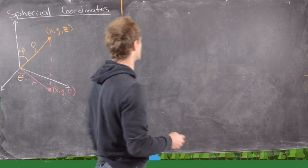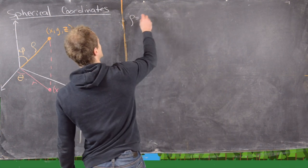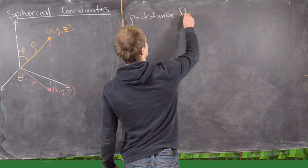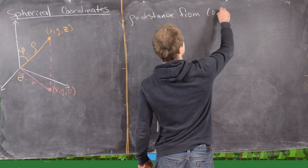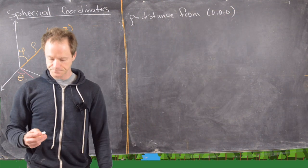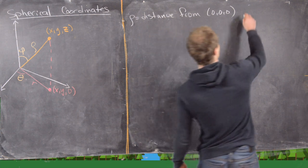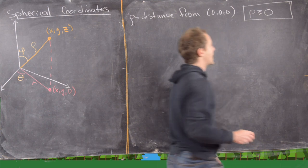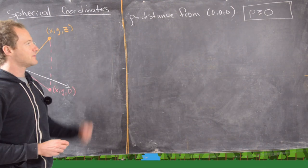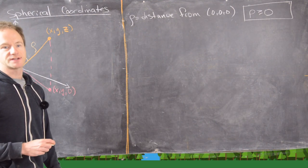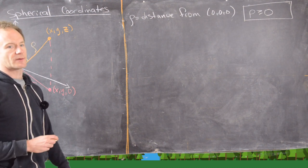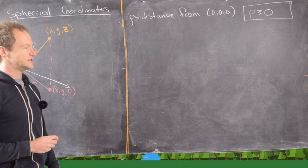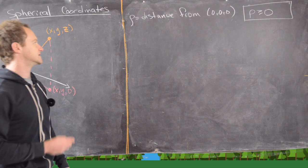So ρ is the distance from the origin, in other words the point (0, 0, 0). It only makes sense to deal with ρ values that are greater than or equal to 0. We can make meaning of negative ρ values, but then we get a non-unique representation of a point. For the most part, we'll only need to deal with ρ values that are greater than or equal to 0.